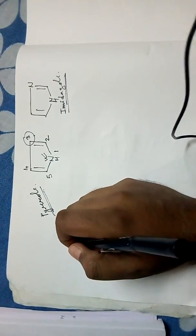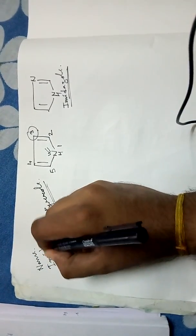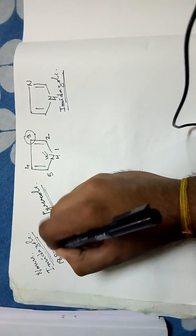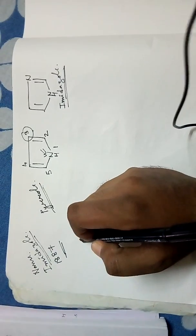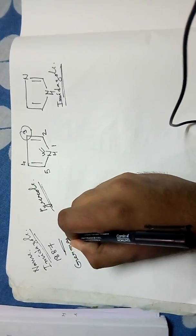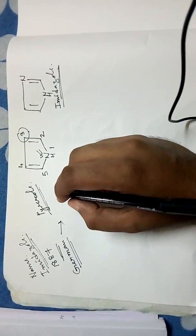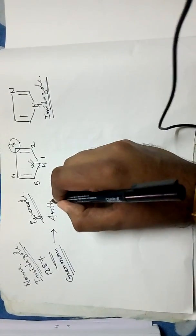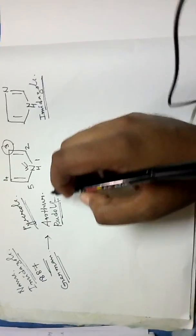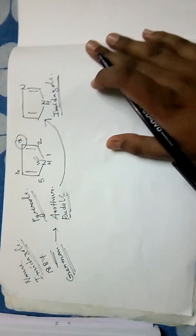Going into the history of imidazole, the name was first coined in the year 1887 by the great German chemist Arthur Rudolph. Arthur Rudolph coined the name imidazole in the year 1887.